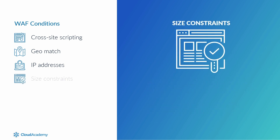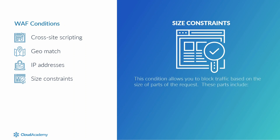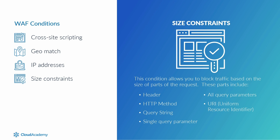Size constraints: this condition allows you to block traffic based on the size of parts of the request. These parts can include the header, the HTTP method, the query string, the single query parameter, all query parameters, the URI (the uniform resource identifier), or the body. Once you have decided on which part of the request to define on size, you can specify operators to define the size restriction, such as greater than, less than, equals, etc. The size is then specified in bytes.